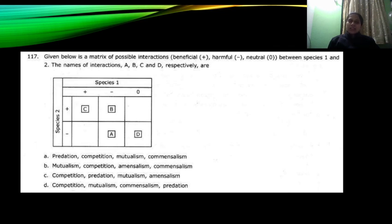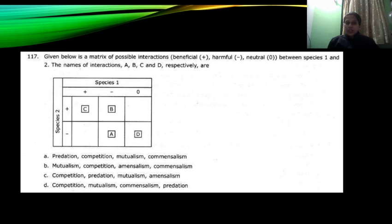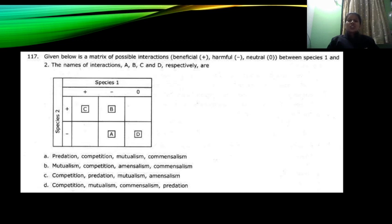This is a previous year question Part C। The question says: Given below is a matrix of possible interactions — Beneficial, Harmful, Neutral — between species 1 and species 2। The name of the interactions A, B, C and D respectively are what? जब positive-positive association है species 1 और species 2 के बीच में तो ये किस प्रकार का association है? अगर negative-negative है तो? Positive-negative है तो? The correct choice is option C।